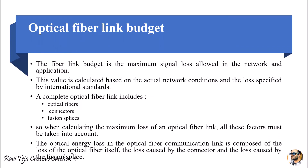Welcome to the course on Microwave and Optical Communications. Today we are going to learn about optical fiber link budget. The optical fiber link budget is the maximum signal loss allowed in the network and application. Whenever we use an optical fiber cable over hundreds of kilometers, due to connections, splices, or various losses such as attenuation, the total signal lost before reaching the output constitutes the optical fiber link budget. This value is calculated based on actual network conditions and standards specified by international bodies.